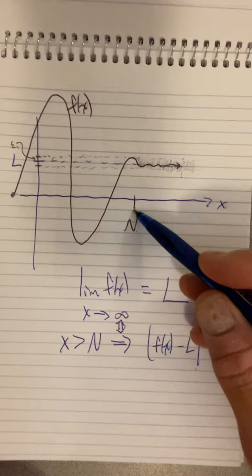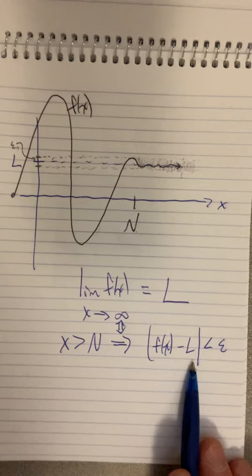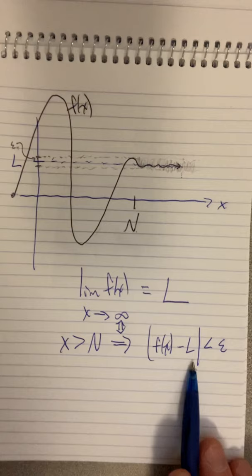So as I close in on epsilon, as I make epsilon smaller, I might have to go further out. My N might have to come out here. But there will be an N for every epsilon choice, no matter how small I make it, so that the distance between f and L is smaller than epsilon. That is the essence of the Bolzano-Weierstrass definition of the limit.